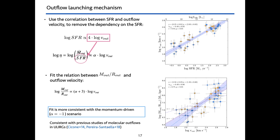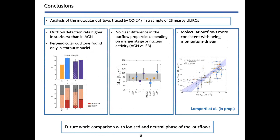This finding is consistent with previous studies of molecular outflows in ULIRGs. To conclude: we have analyzed molecular outflows traced by CO(2-1) in a sample of 25 nearby ULIRGs and found that the outflow detection rate is higher in starburst than in AGN. We found perpendicular outflows mostly in starburst nuclei. We do not observe a clear difference in outflow properties depending on the merger state or nuclear activity. With our data, the molecular outflows are more consistent with being momentum driven than energy driven.